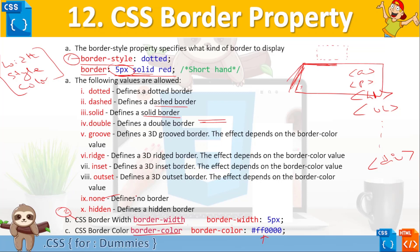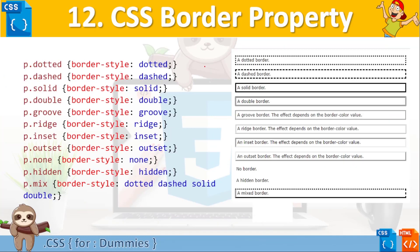There is also none — if you don't want a border around a component, you set it to none. Hidden means the border exists but won't be shown. If you are not going to specify any border, you can set it to none. You can also specify a mixed style — for example, setting border-style to dotted, dashed, solid, and double applies different styles to each of the four sides.